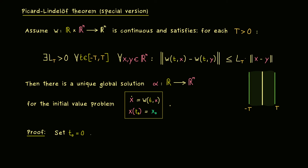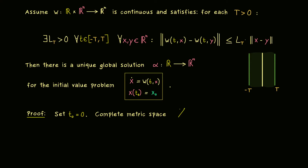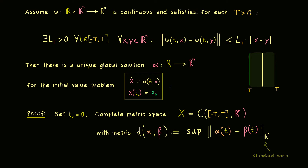As in the original proof, we want to apply the Banach fixed point theorem, which means we need a complete metric space. From part 12 you know this should be given by continuous functions, and now we can choose them on the interval −T to T. The standard metric on this space is given by the supremum norm: for two functions α and β we take the difference and consider the maximum. More concretely, we measure the distance in the standard norm of R^n and go through all points t in the domain. It's a complete metric space, and the contraction we want to consider is the function phi from before, whose fixed points give solutions of the initial value problem.